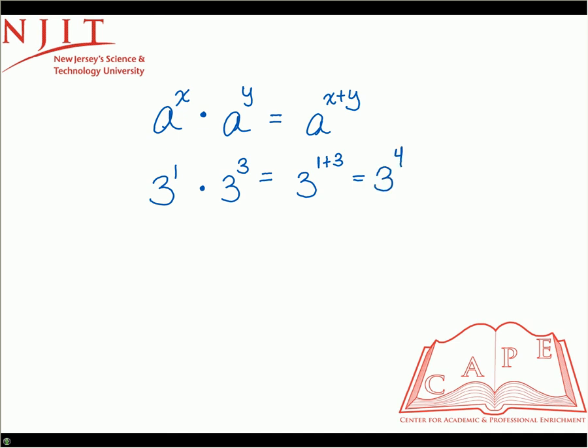So that's the first rule. Second rule is when you have division. If you had some number a raised to the x divided by the same number raised to the y, instead of addition, now it's subtraction.